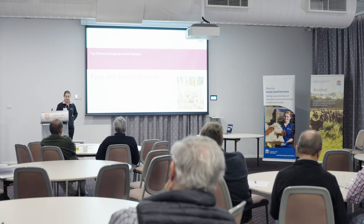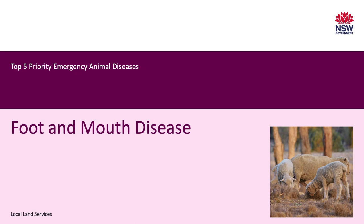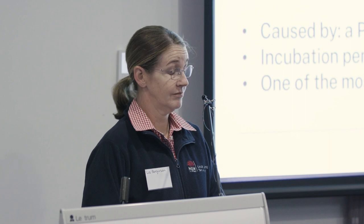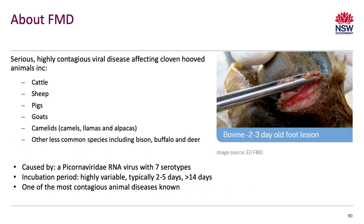Foot and mouth disease is a very serious, highly contagious viral disease affecting cloven-hoofed animals. There are seven serotypes and there is a lack of cross-protection between serotypes. Incubation is variable depending on the strain, dose, husbandry, and animal factors such as immunology and route of transmission. Infected animals excrete the virus in fluid from ruptured vesicles, exhaled air, saliva, milk, semen, faeces, and urine.